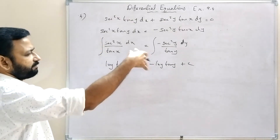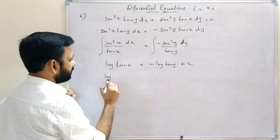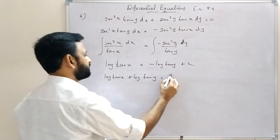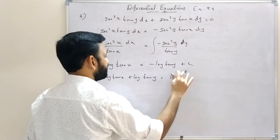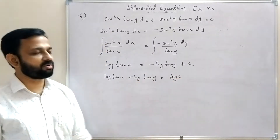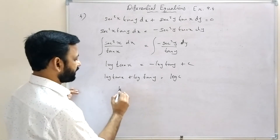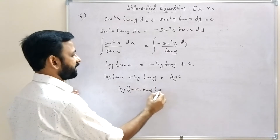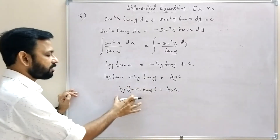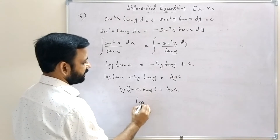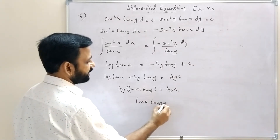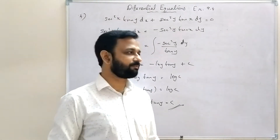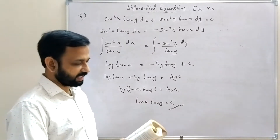Writing c as log c: log|tan x| + log|tan y| = log c. Using log a + log b = log(ab): log|tan x · tan y| = log c, therefore tan x · tan y = c. This is the general solution.